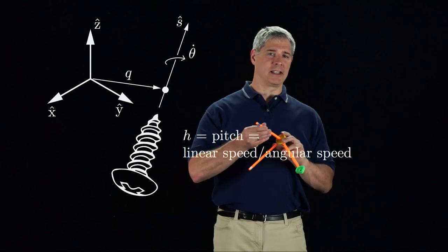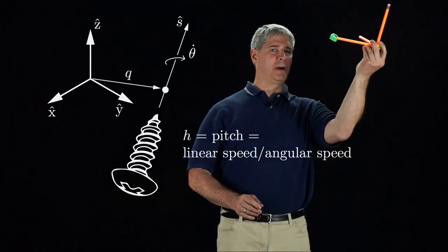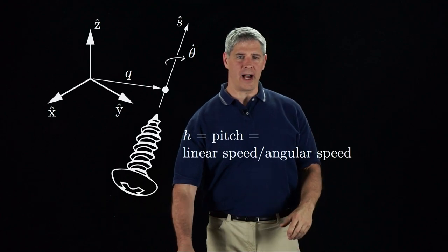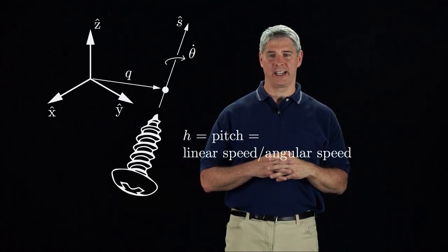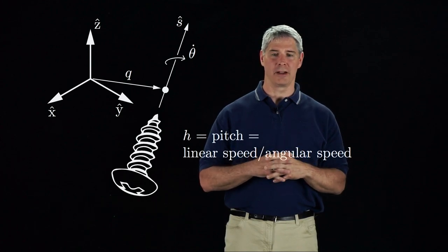It's as if the body's instantaneous motion is twisting about the screw axis. The screw axis defines the direction the body is moving, and theta dot is a scalar indicating how fast the body rotates about the screw.